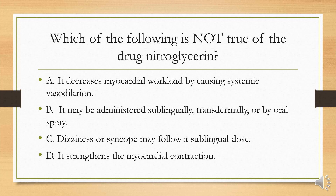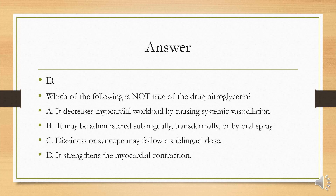Which of the following is not true of nitroglycerin? Is it A, it decreases myocardial workload by causing systemic vasodilation; B, it may be administered sublingually, transdermally, or by oral spray; C, dizziness or syncope may follow a sublingual dose; or D, it strengthens the myocardial contraction? The answer is D. Nitroglycerin causes vasodilation — it lowers the patient's blood pressure. As a nurse, check blood pressure before administering and do not give nitroglycerin if the systolic blood pressure is below 90. Side effects include headache, vertigo, and weakness.